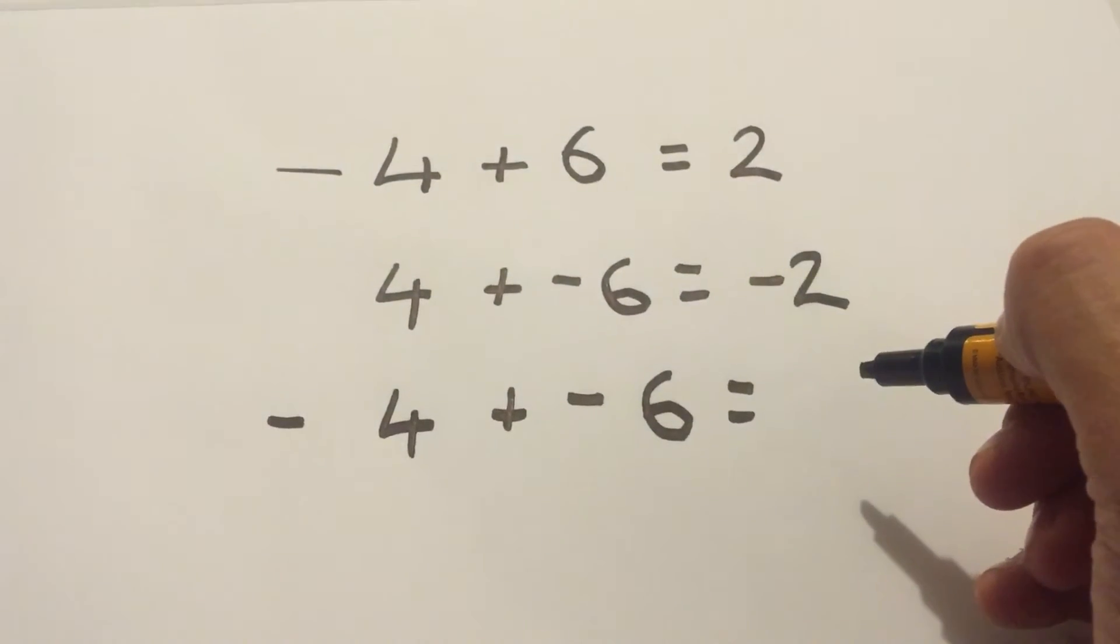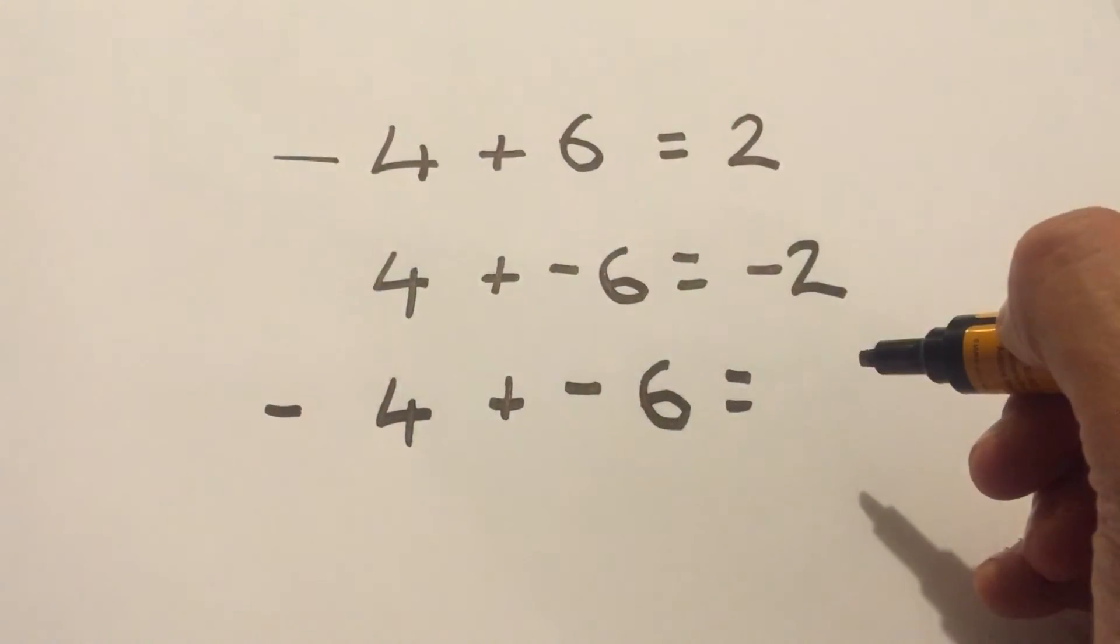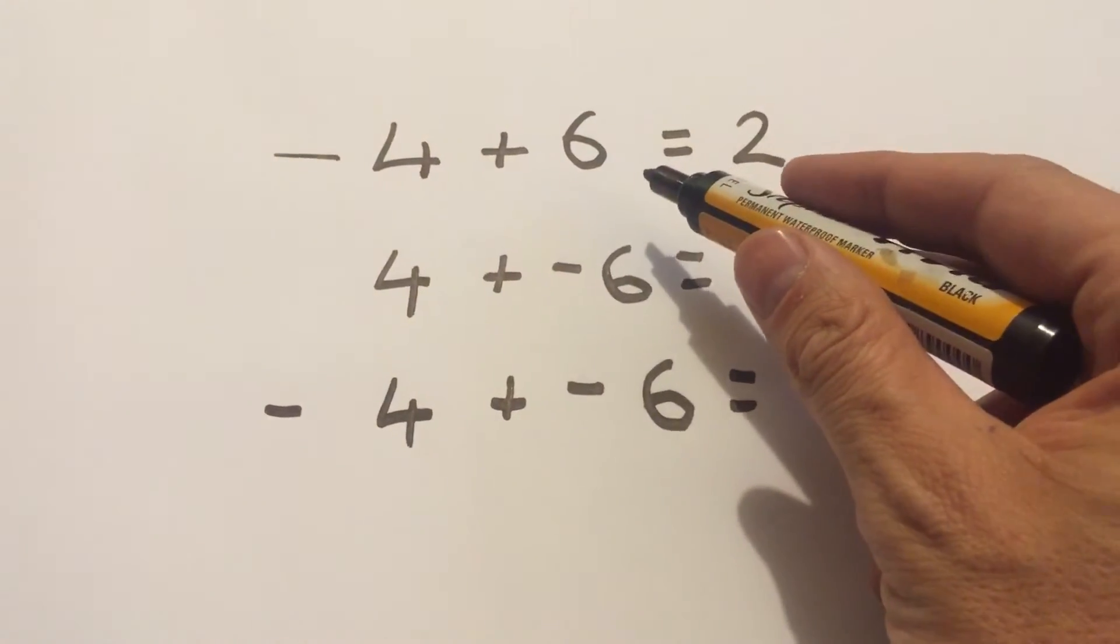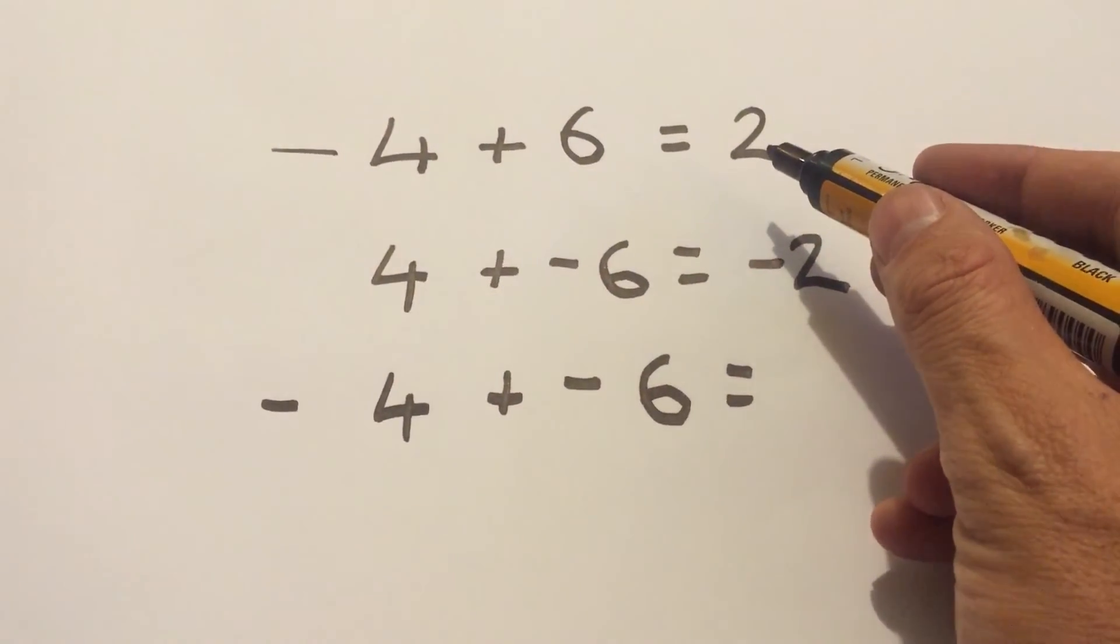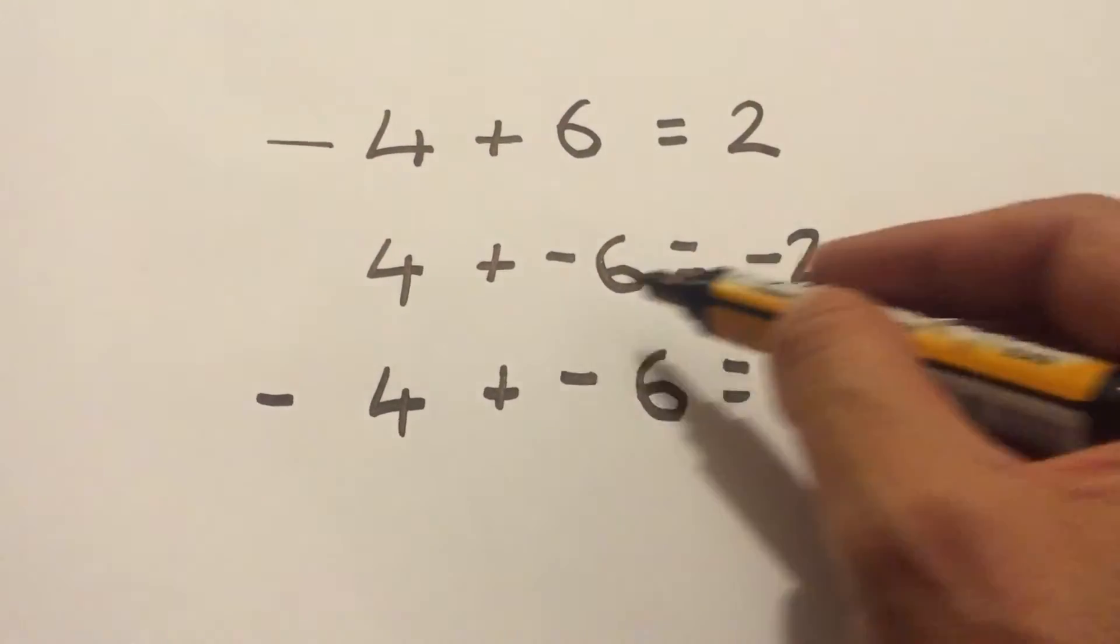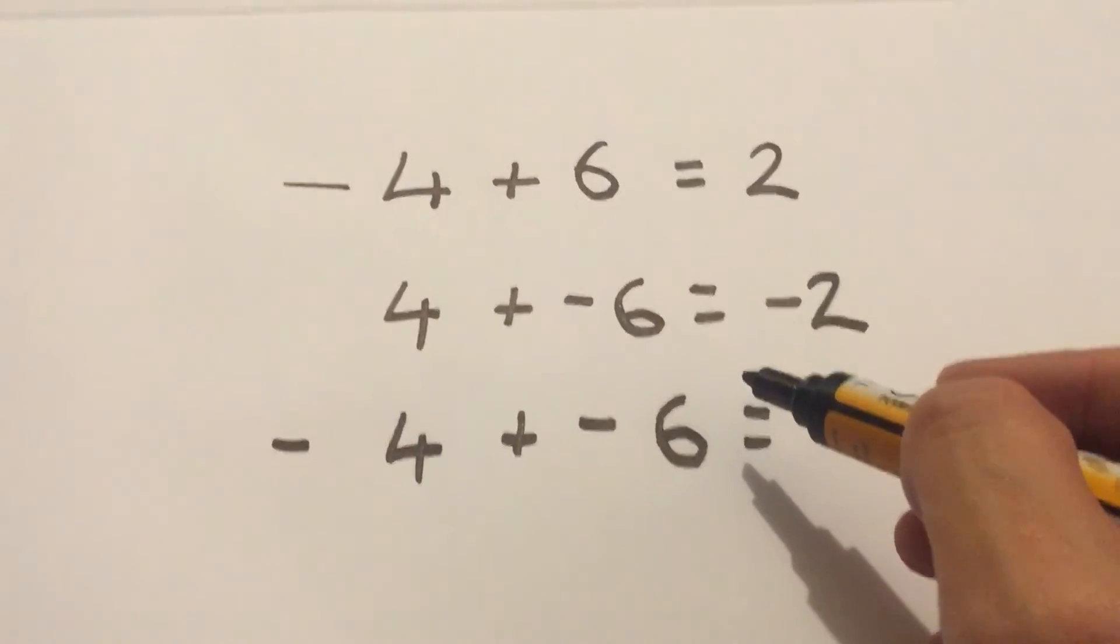What I tend to do here is think about what it would be, what the other ones would be. So we've already done negative 4 plus positive 6, which is 2. Okay, we've done 4 plus negative 6, which is negative 2. So negative 4 plus negative 6 can only mean one thing.